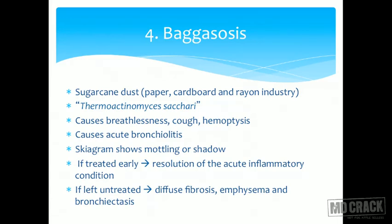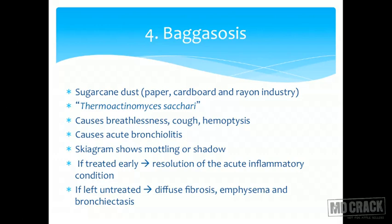Bagassosis: the bagas is made up of sugar cane, so it is sugar cane dust used in paper, cardboard, and rayon industry. The actual constituent thought to cause bagassosis is an actinomyces called thermoactinomyces saccharis. This is an exception — you have an actinomyces thought to be the agent of a pneumoconiosis, which makes it important. What happens in bagassosis is breathlessness, cough, and hemoptysis — so it looks infectious. It can also cause acute bronchiolitis.